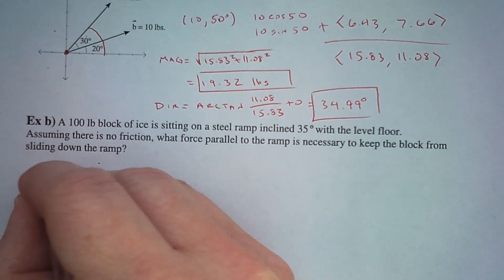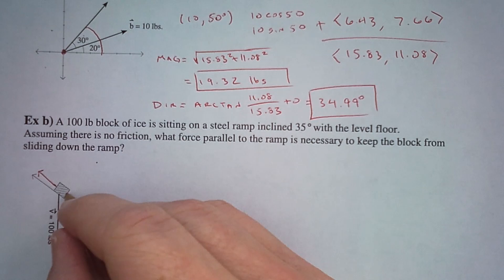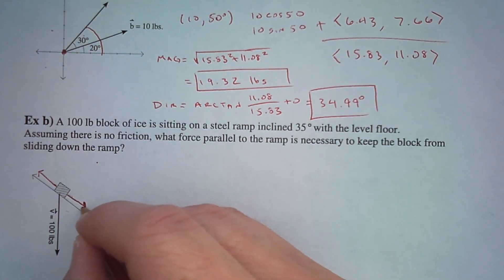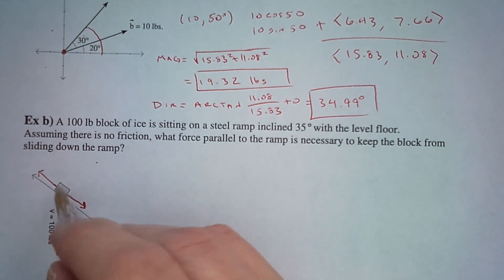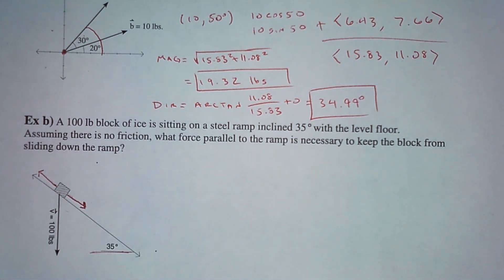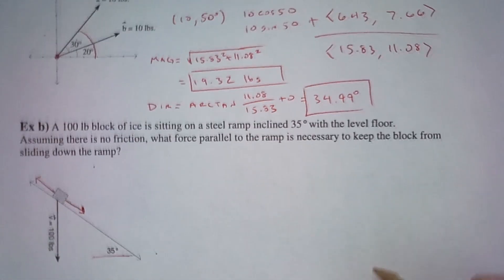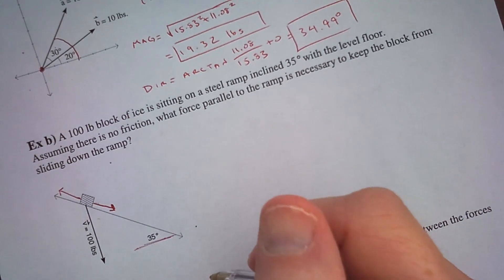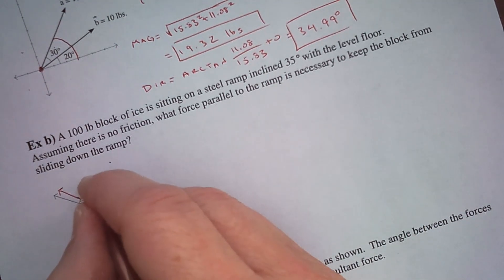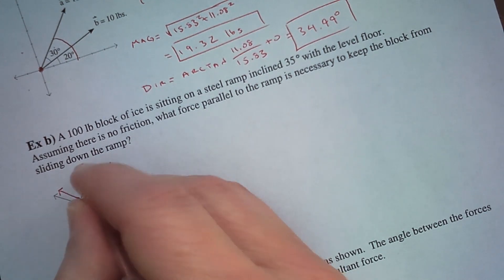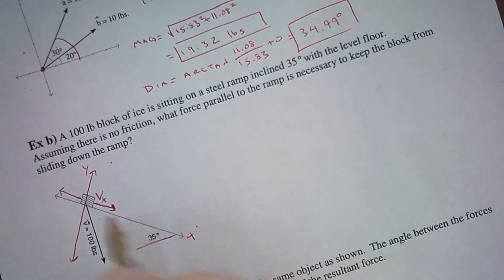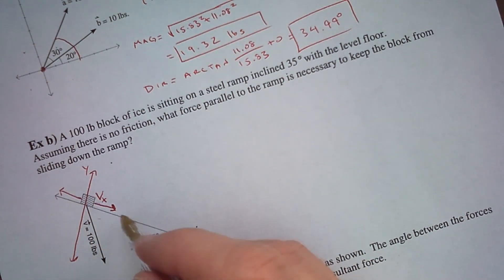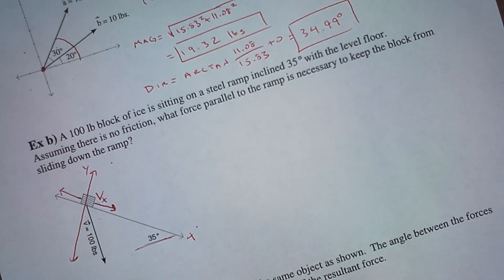To find the force you would have to pull up the ramp, you find how much force is going down the ramp, and you match that force going the other direction to hold it exactly where it is. More force would start pulling it up the ramp. We can tilt this and put it on an xy-axis. The vector's x-component tells us how much force it has going down the ramp, and we can match that force to keep it from sliding.